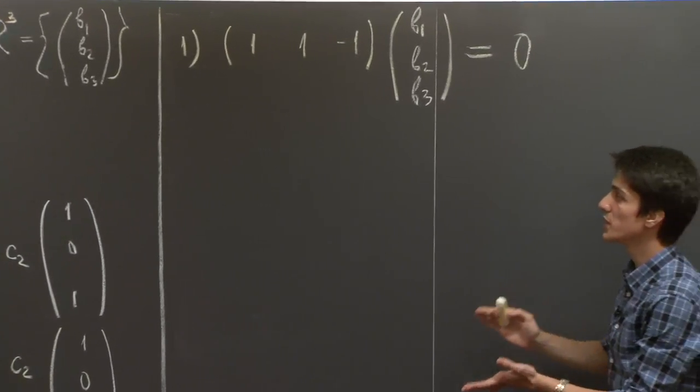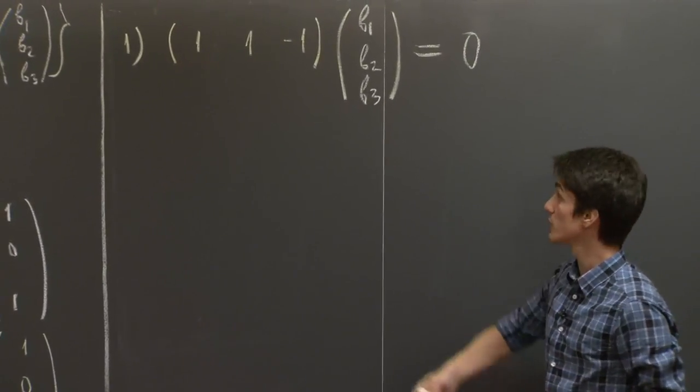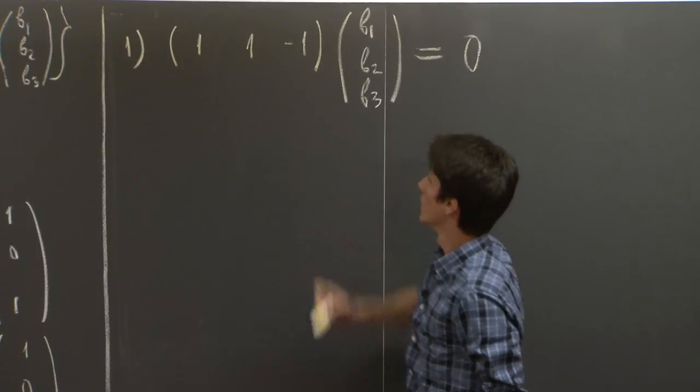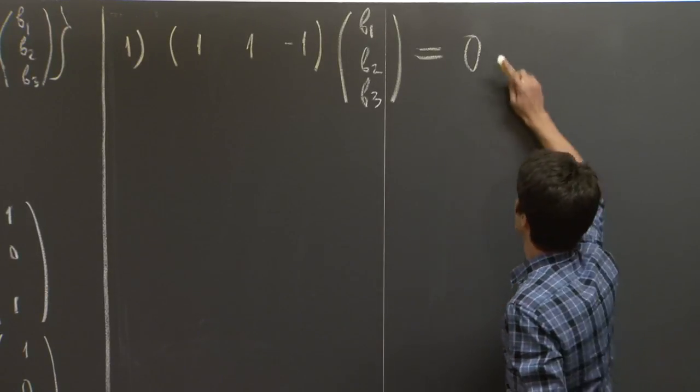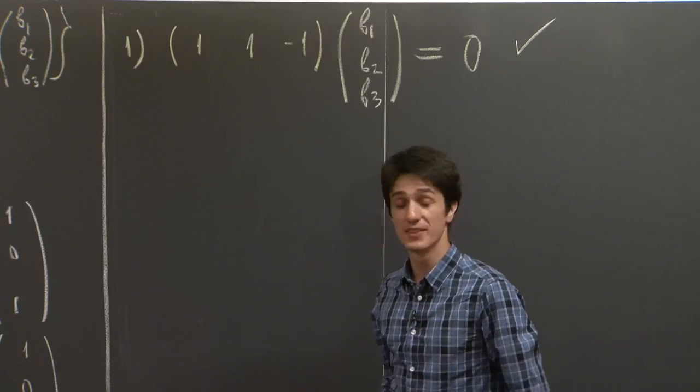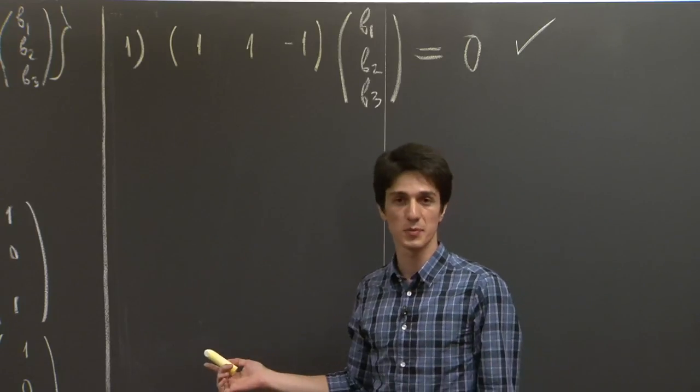So therefore, b₁, b₂, and b₃ precisely describe the null space of (1, 1, -1). And thus, what we are given in the first question is a subspace.